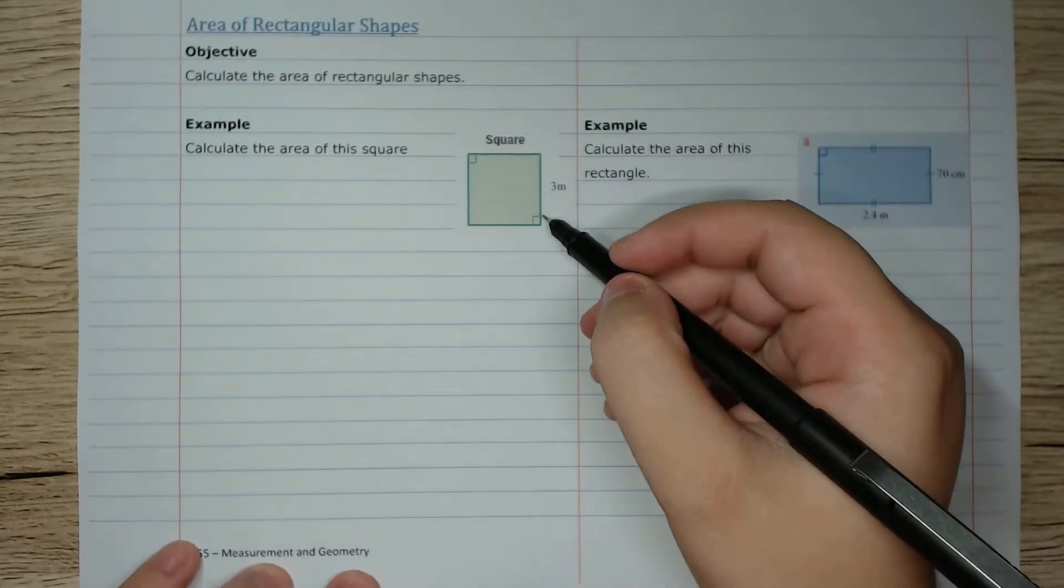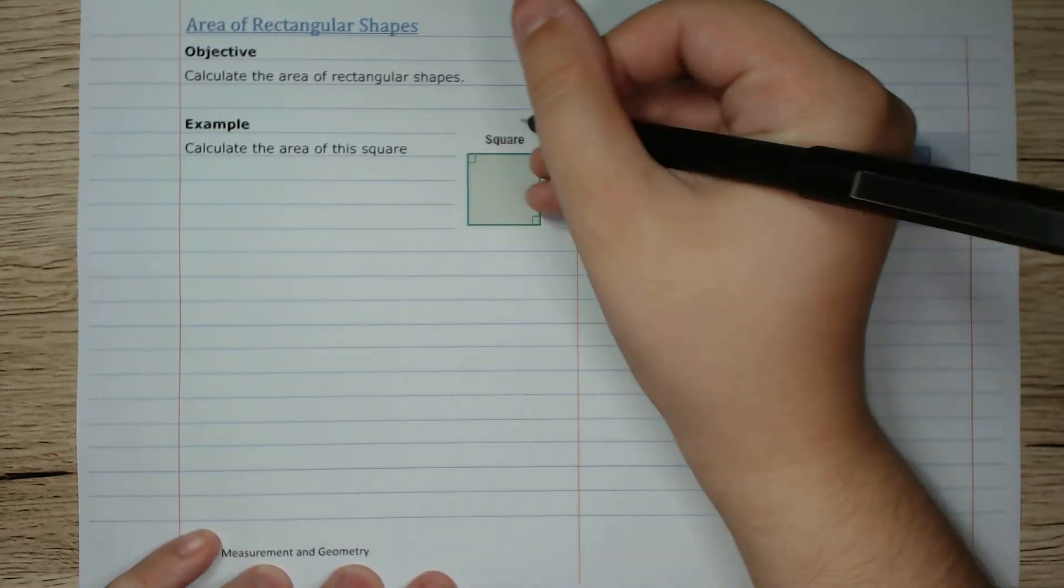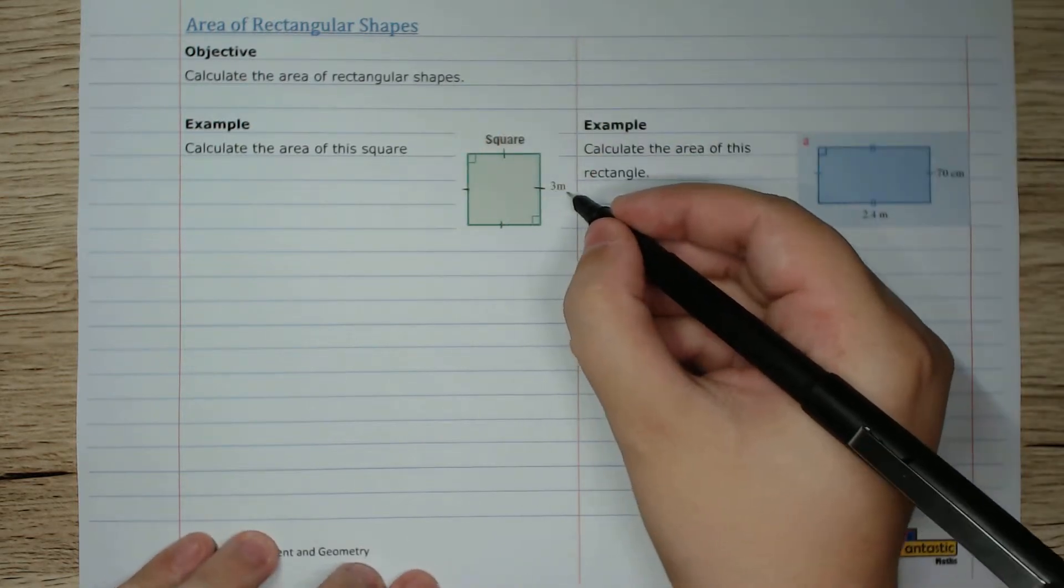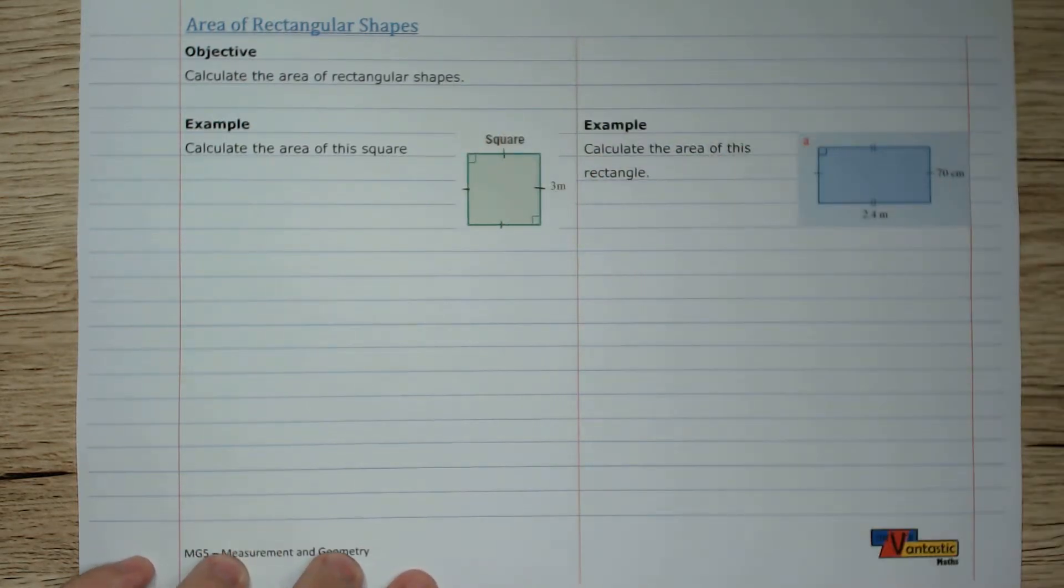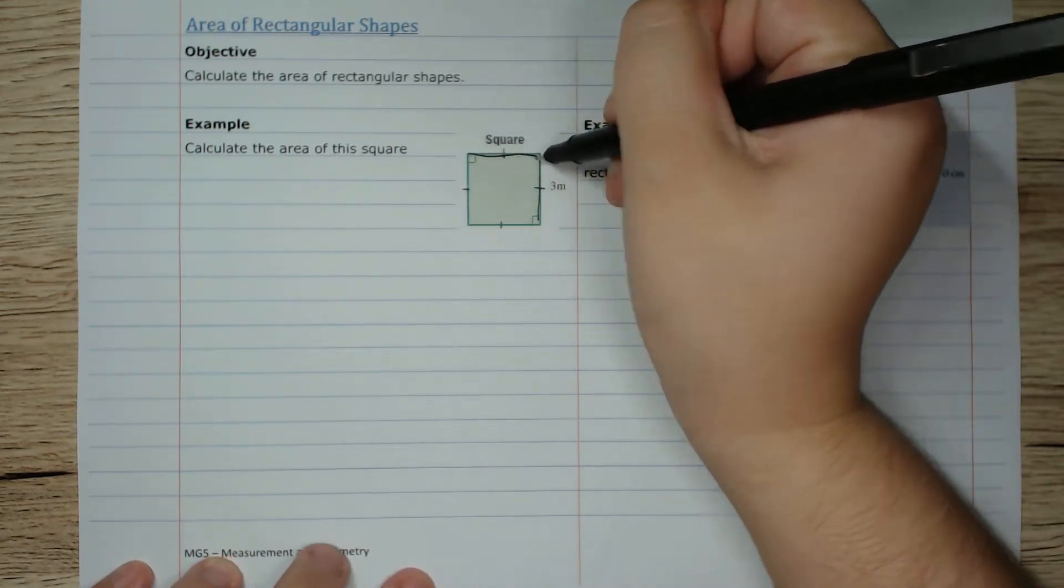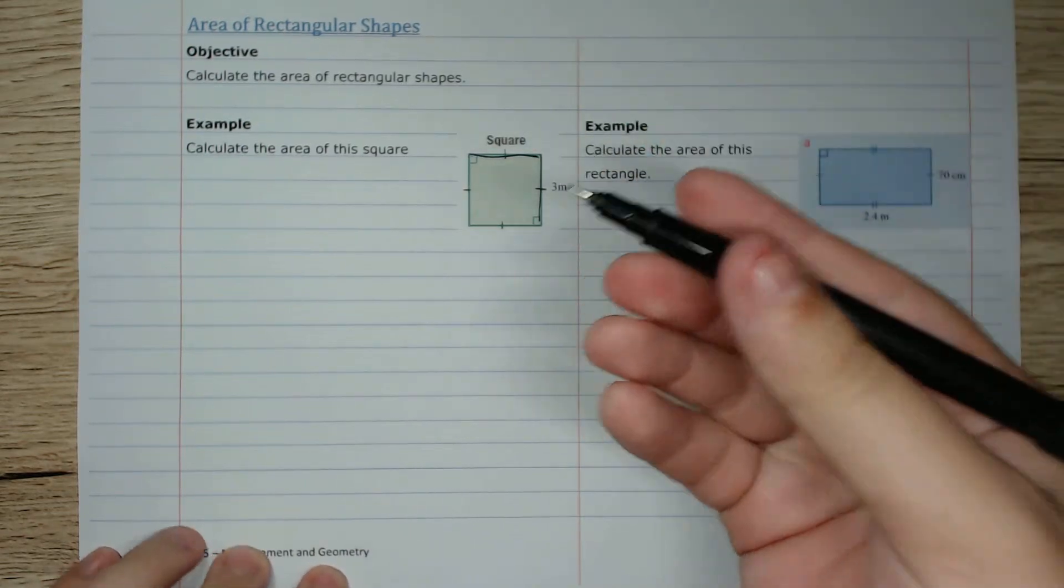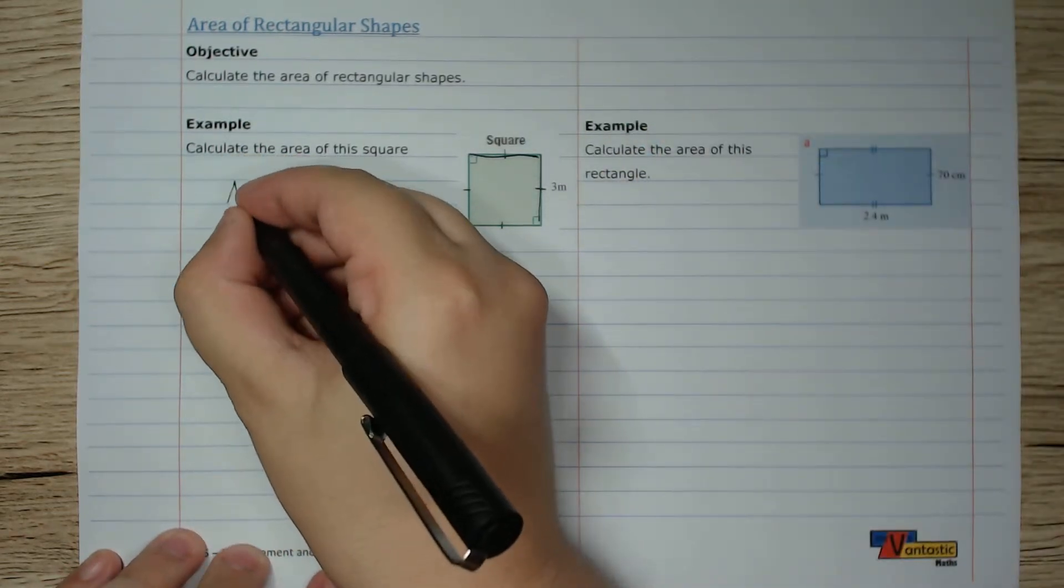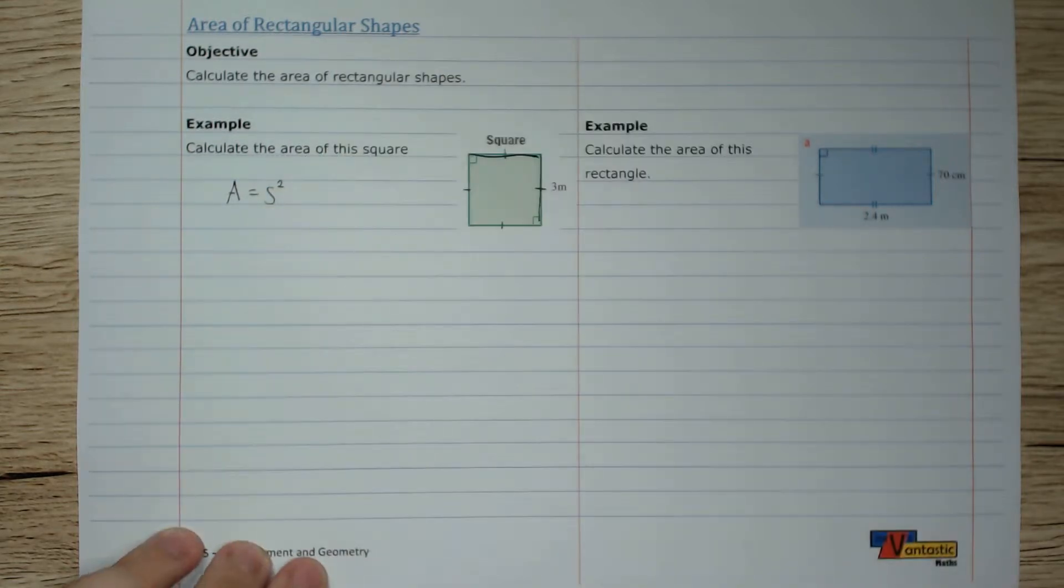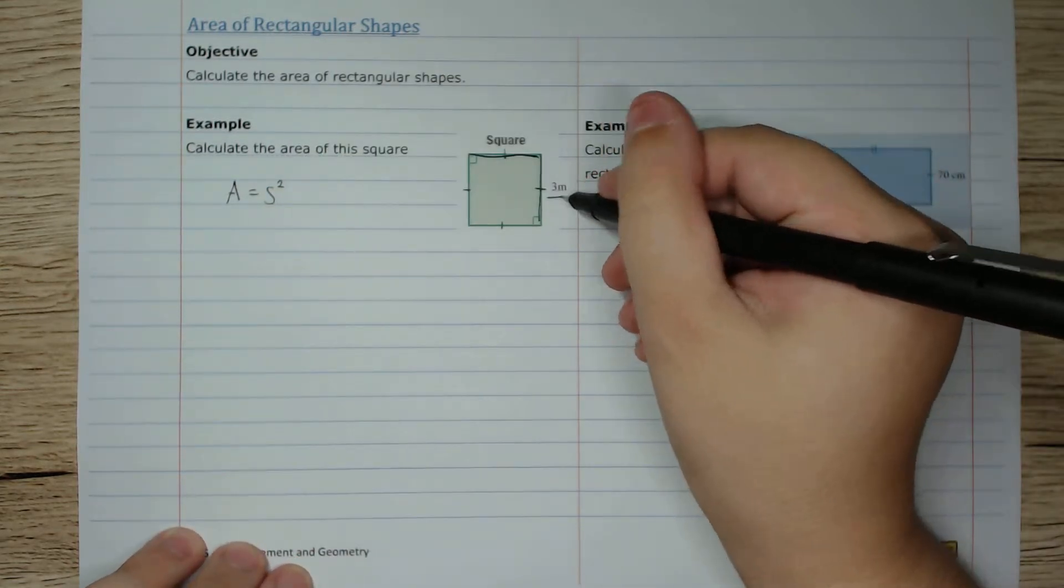So here we have a square, and in a square all of the sides are exactly the same length, and we're told that that length is 3 meters. To calculate the area of that square we're going to multiply one length by the other, or in short we're going to be squaring the side length. So for a square we're going to square the length.